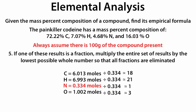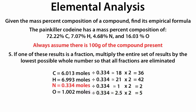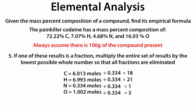If one of these results is a fraction, multiply the entire set of results by the lowest possible whole number so that all fractions are eliminated. In this case all results are whole numbers, so we don't need to do anything. For example, if the results were 18, 21, 1, and 2.5, we would multiply the entire set by 2 to eliminate the 2.5, giving 5.